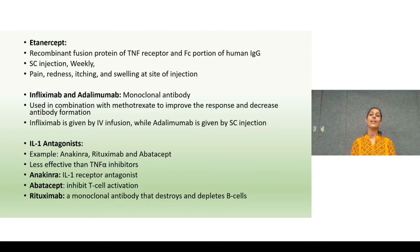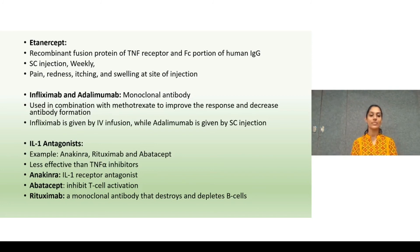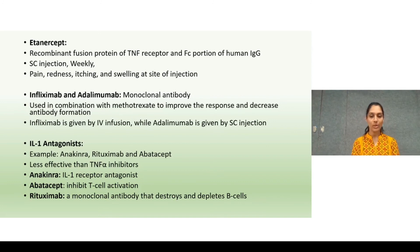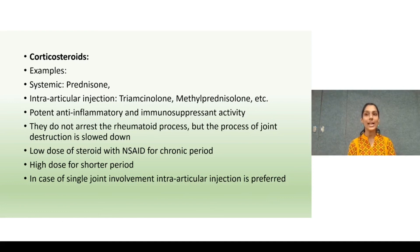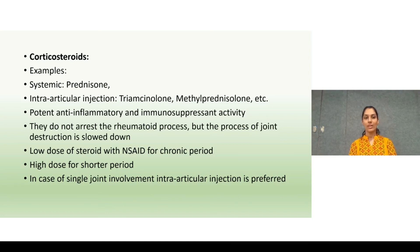Interleukin-1 antagonists are less effective compared to TNF-alpha inhibitors. Anakinra is an interleukin-1 receptor antagonist. Abatacept inhibits T cell activation, and rituximab is a monoclonal antibody that destroys and depletes B cells. Regarding corticosteroids, systemic corticosteroids such as prednisolone, and intra-articular injections like triamcinolone and methylprednisolone, have potent anti-inflammatory and immunosuppressive activity. They do not arrest the rheumatoid process but slow joint destruction. Low-dose steroids with NSAIDs are prescribed for chronic use; higher doses for shorter periods. For single-joint involvement, intra-articular injection is preferred.